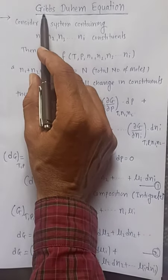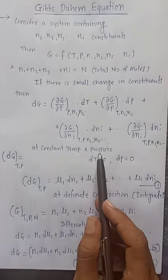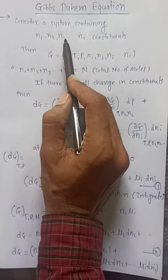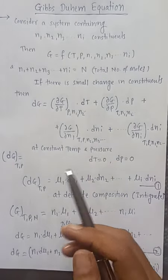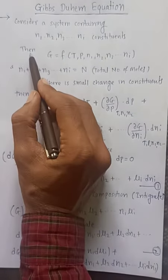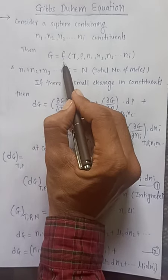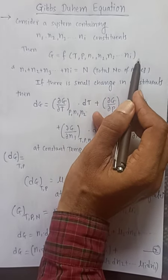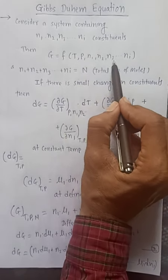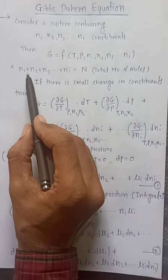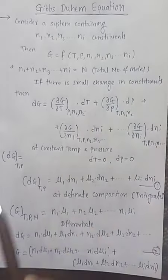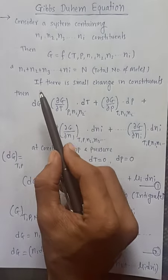Dear students, today we will see the Gibbs-Duhem equation. Consider a system containing a number of constituents n1, n2, n3, up to Ni. We will consider the general case where Ni number of constituents are present. The total of all these constituents will be capital N, that is, the total number of moles.